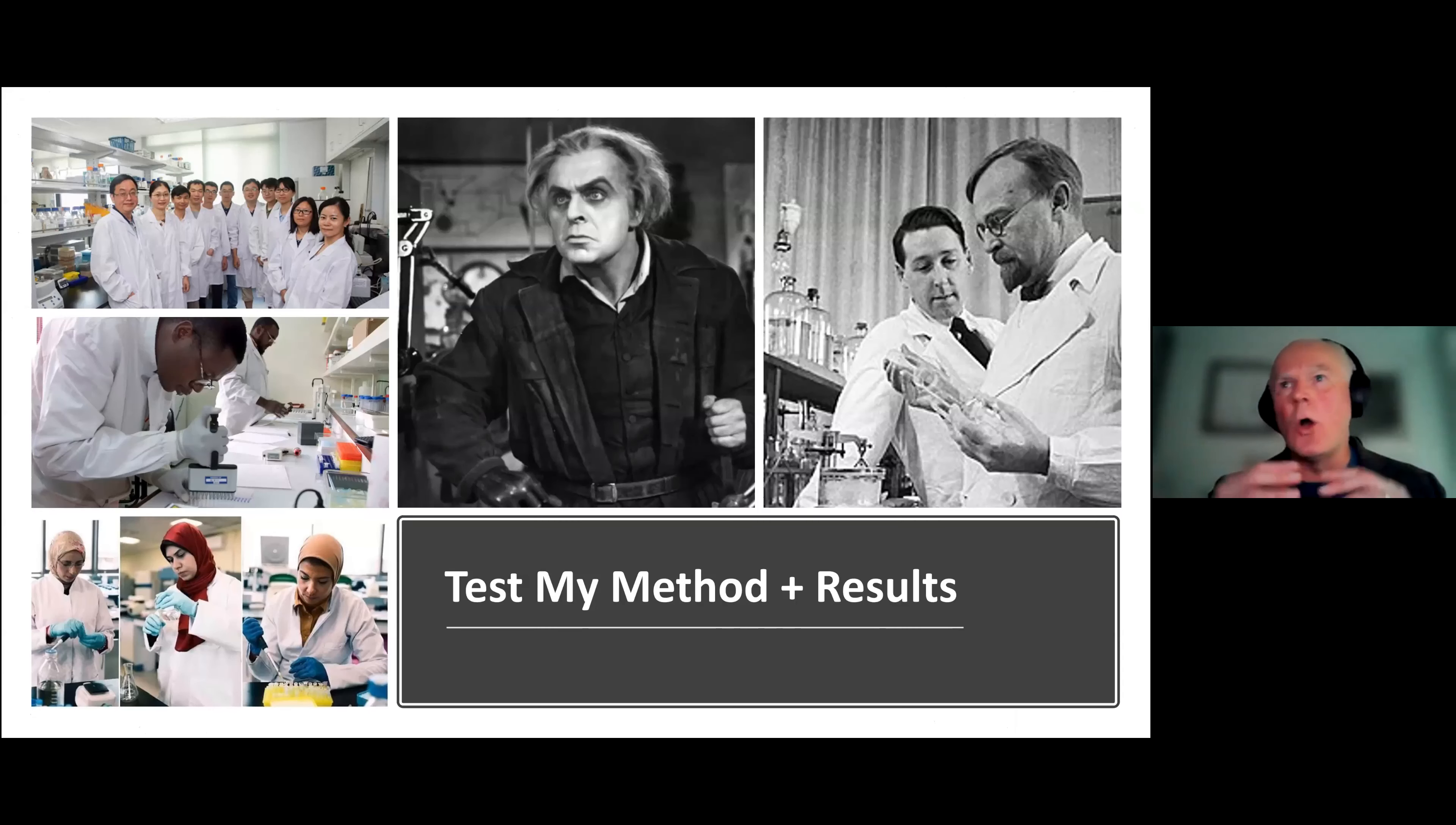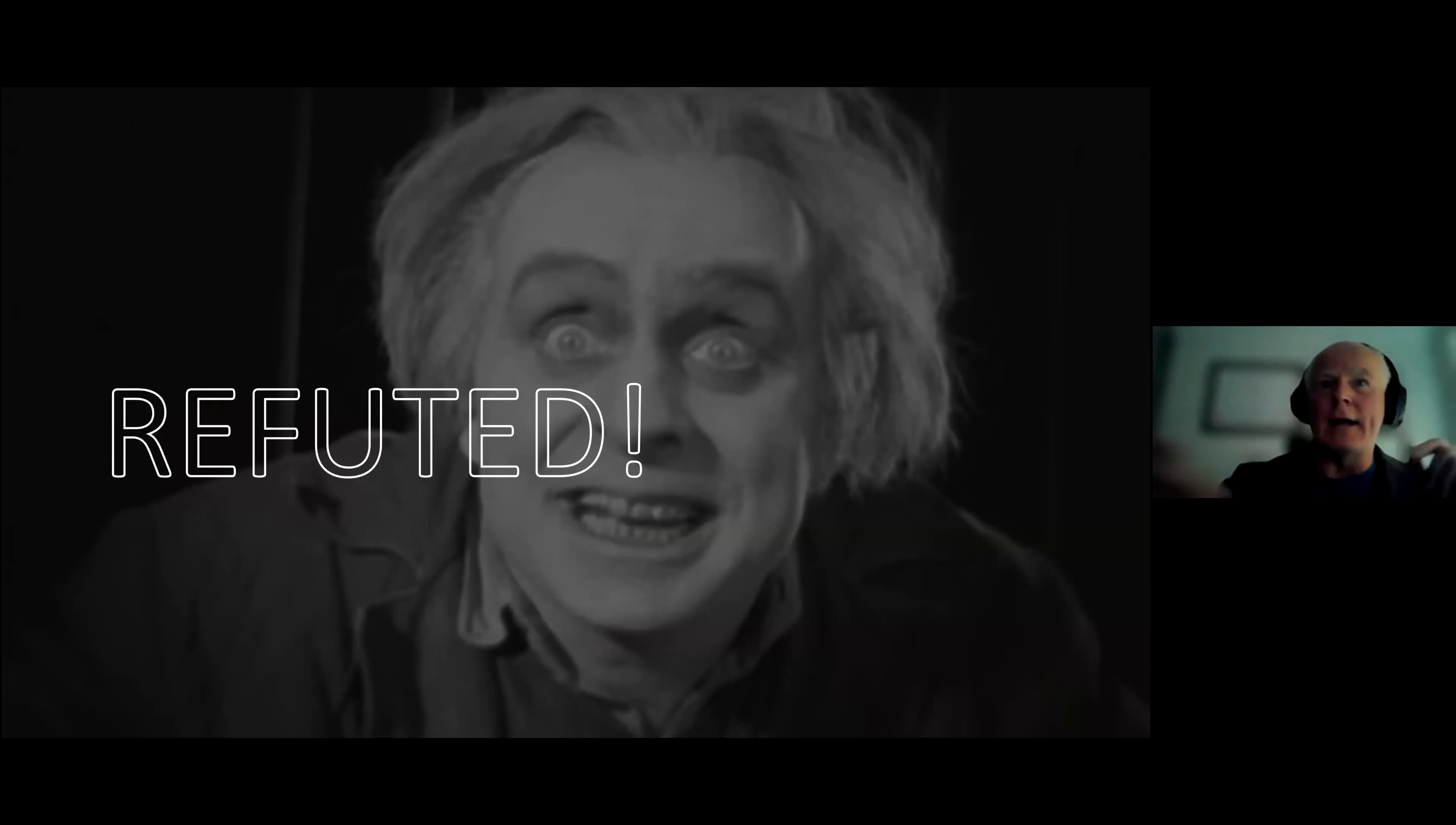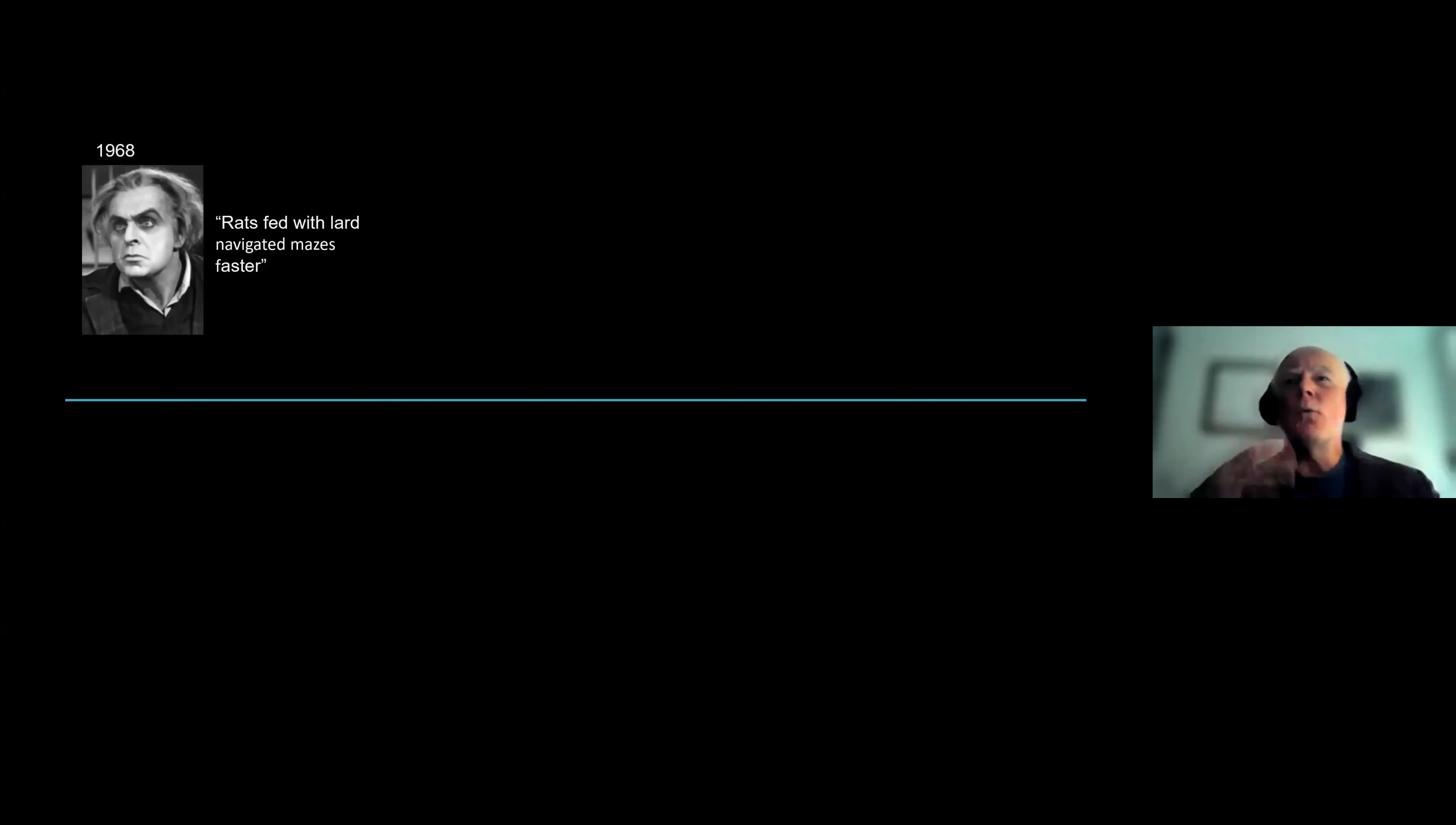Now, what happens is that all over the world, scientists working in the same field get Dr. John's article in the journal and they say, right, we're going to test this. First of all, we're going to test his method. Is his method robust? Is it a proper experiment? And secondly, we're going to run the same experiment, but with a much bigger sample. And then we're going to see if our results match his results. If our results match his results, then it's got a valid theory. Now, this can take years. After 10 years, the conclusions come back. Poor Dr. John. His theory has been refuted. The method was flawed. The sample was too small. The conclusions he drew were illogical. That's refutation. And that's an essential part of the scientific process.